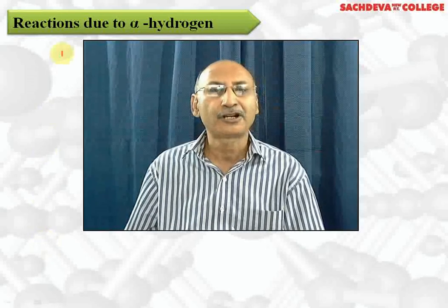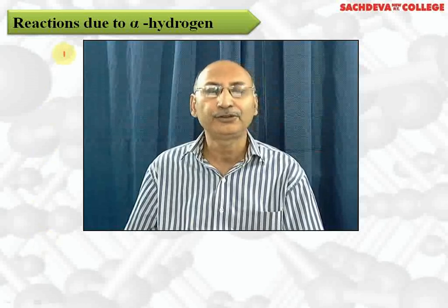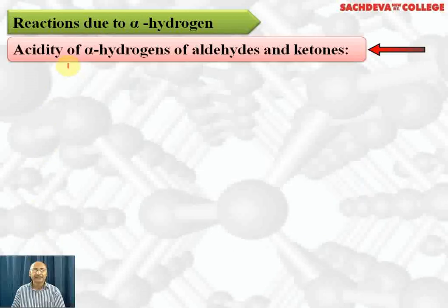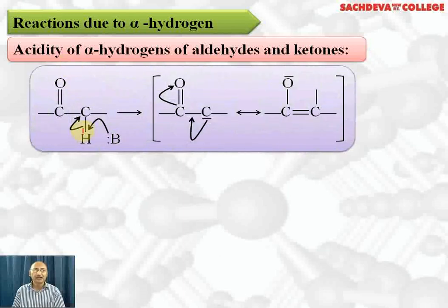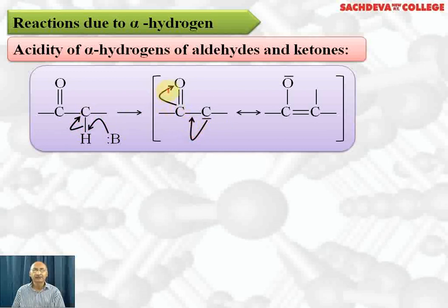Next, we are taking the most important reactions of aldehydes and ketones — reactions due to alpha hydrogen. The carbon attached to the functional group is called alpha carbon, and the hydrogen attached to alpha carbon is called alpha hydrogen. A base can abstract this hydrogen as H⁺, and the pair of electrons will form a negative charge, which results in double bond formation, shifting to the oxygen atom.